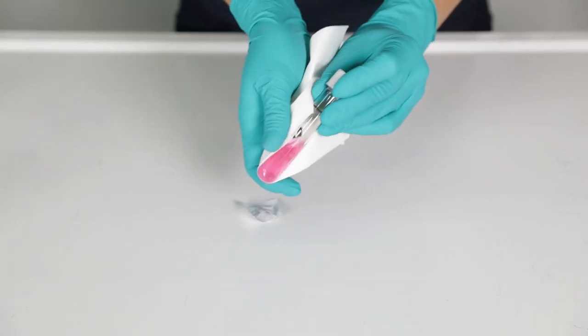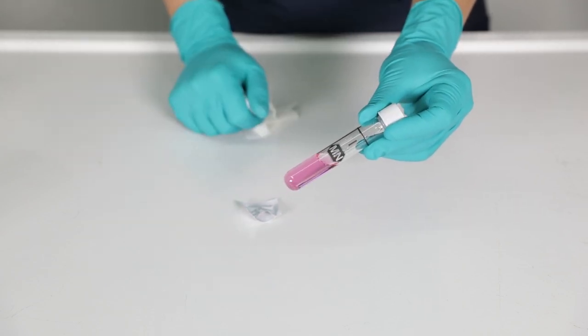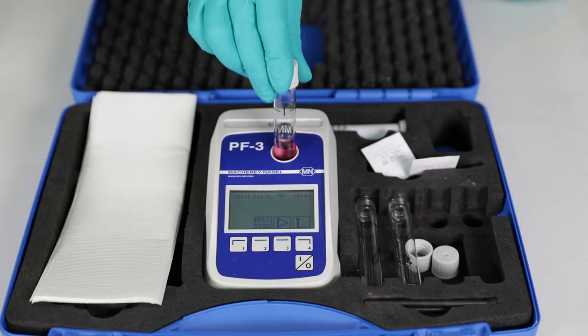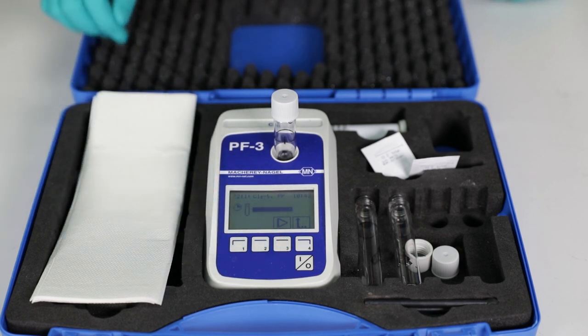Ensure that there are no fingerprints at the outside of the cuvette or gas bubbles on the inside. Insert the cuvette into the photometer. Wait for two minutes reaction time and determine the chlorine concentration.